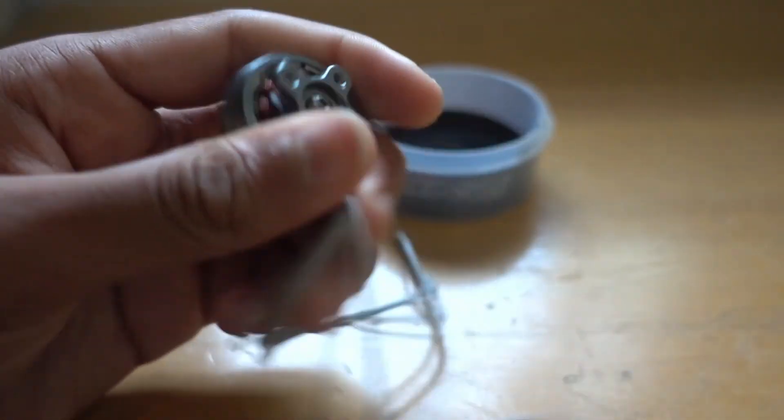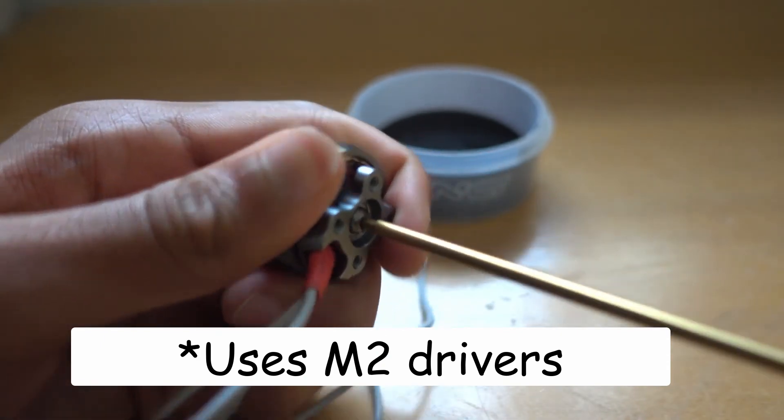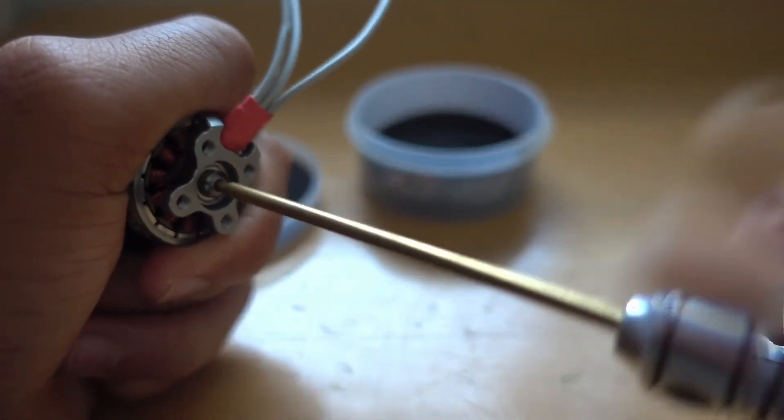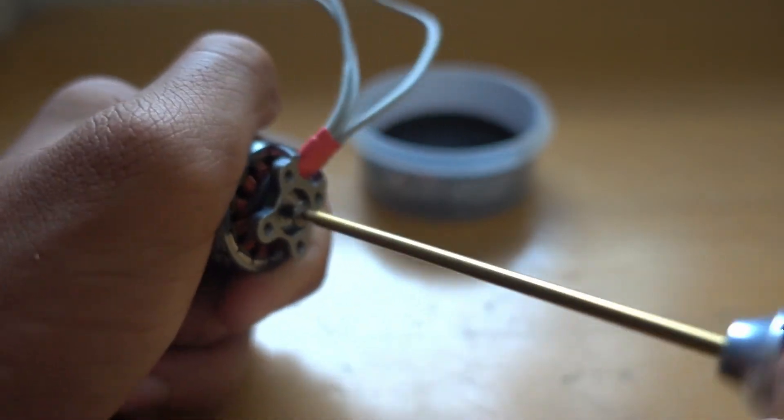The lock screw at the bottom is really nice because it's M2, unlike a lot of other motors. And another really nice feature about this is, let me just open it up.